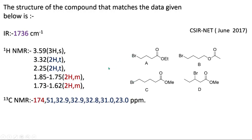Now come to option A. In option A there is an OEt group, that means OCH₂CH₃ — so two-hydrogen quartet and three-hydrogen triplet. But we don't have any chemical shift values or multiplicity like that, so we can also eliminate option A very easily. Now we have only option C and option B.